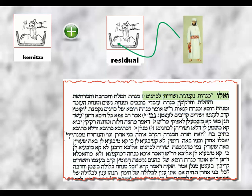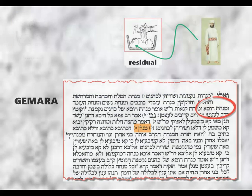The Gemara asks: Minalan — what textual basis is there for the residual of the other ten subcategories belonging to the Kohen, and in particular the Minchat Choteh, which technically is a sin offering rather than a Mincha offering?